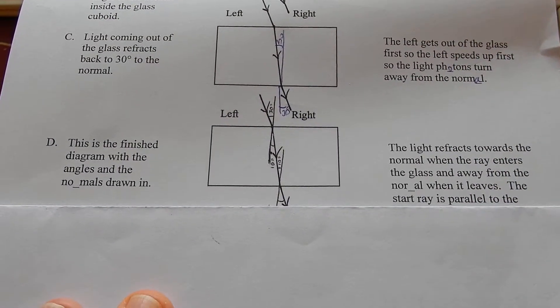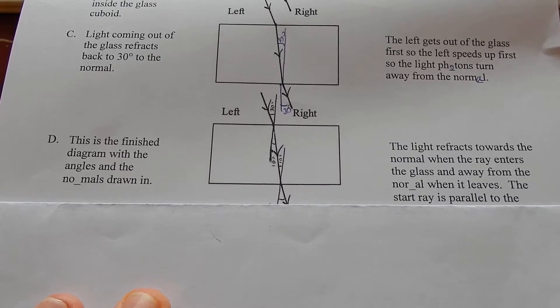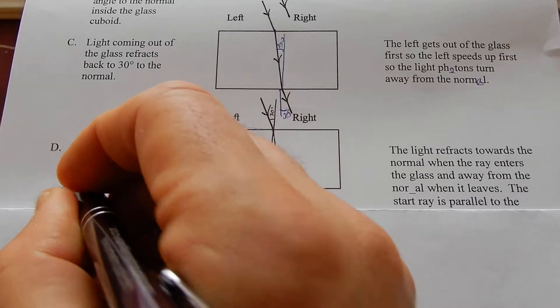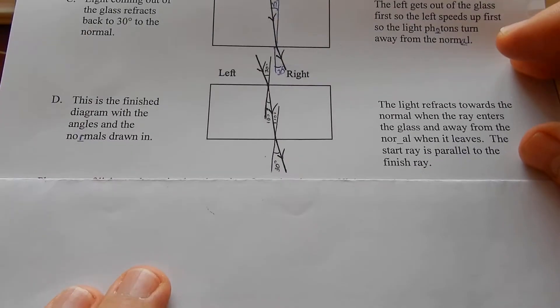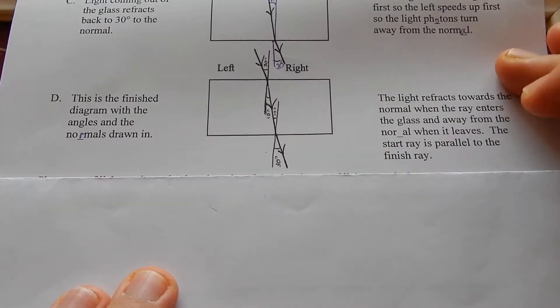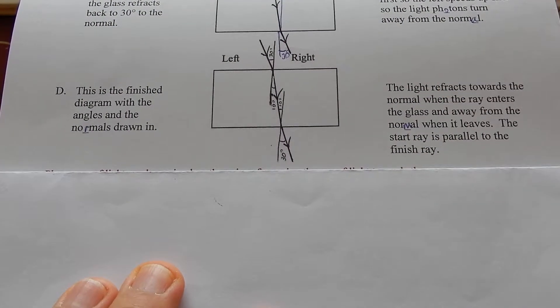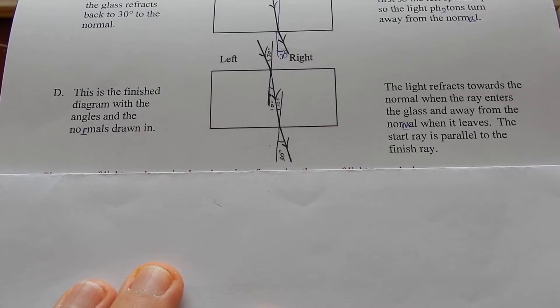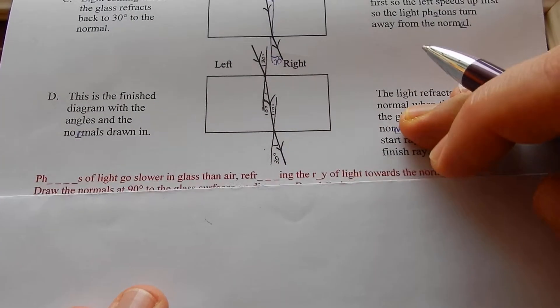This is the finished diagram with the angles and the normals drawn in. The light refracts towards the normal when the ray enters the glass and away from the normal when it leaves. The start ray is parallel to the finish ray.